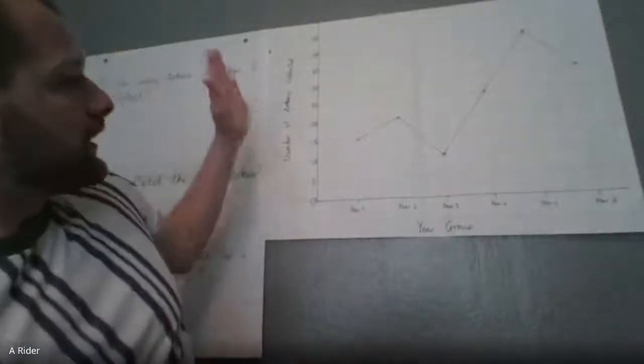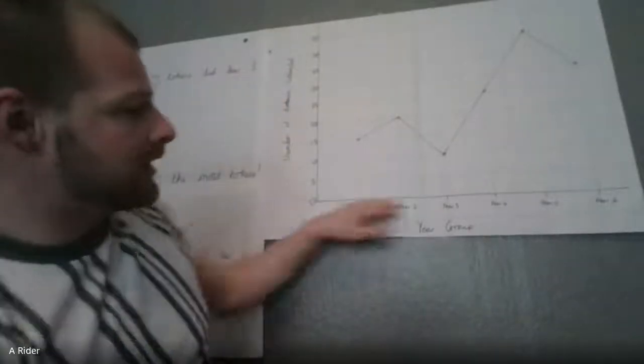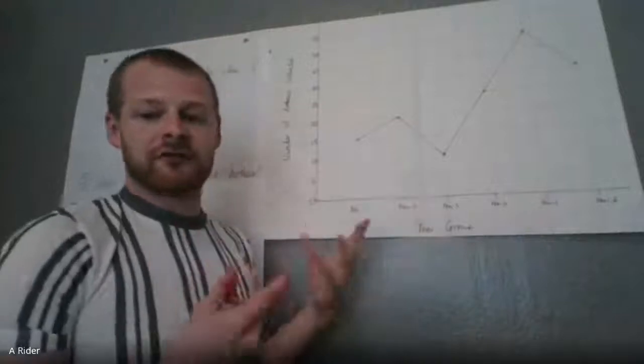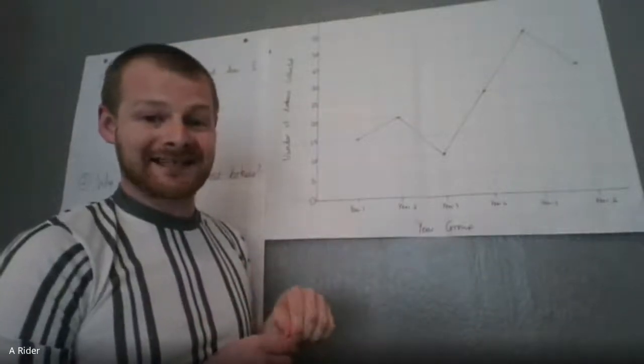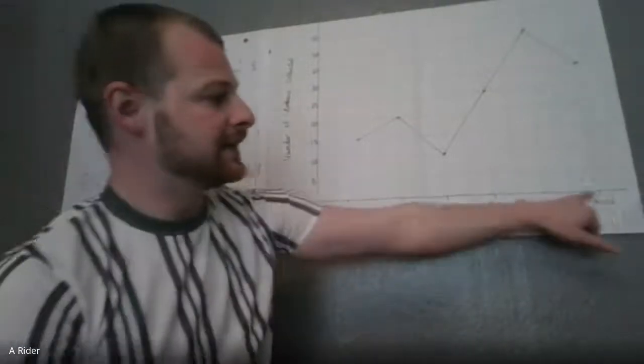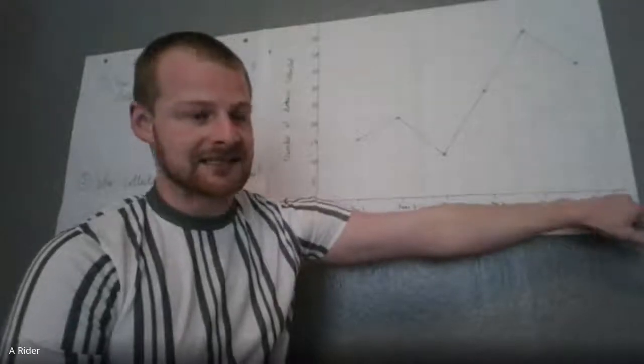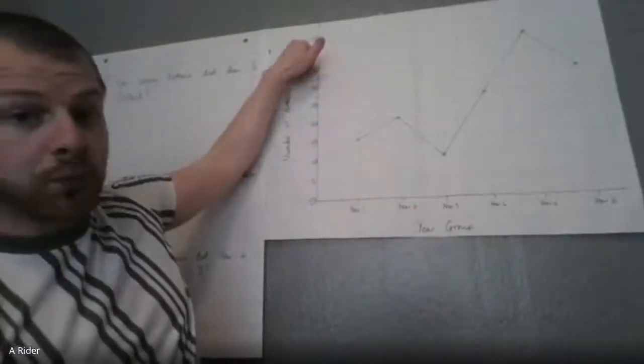On our line graph, we have two lines, which on a line graph we call them an axis. So this line here is the x-axis, and the line going up is the y-axis.